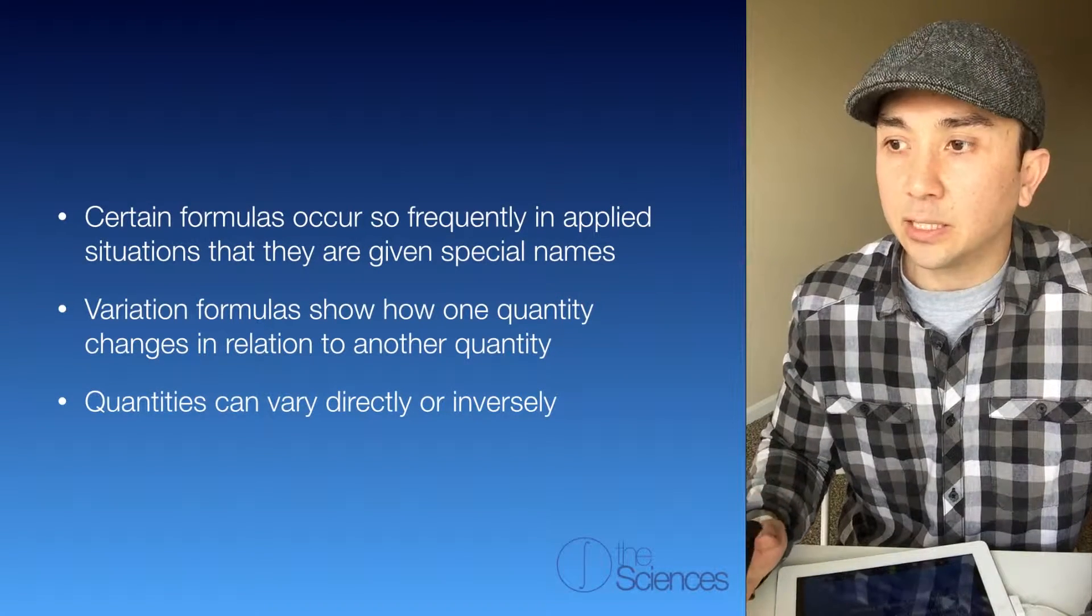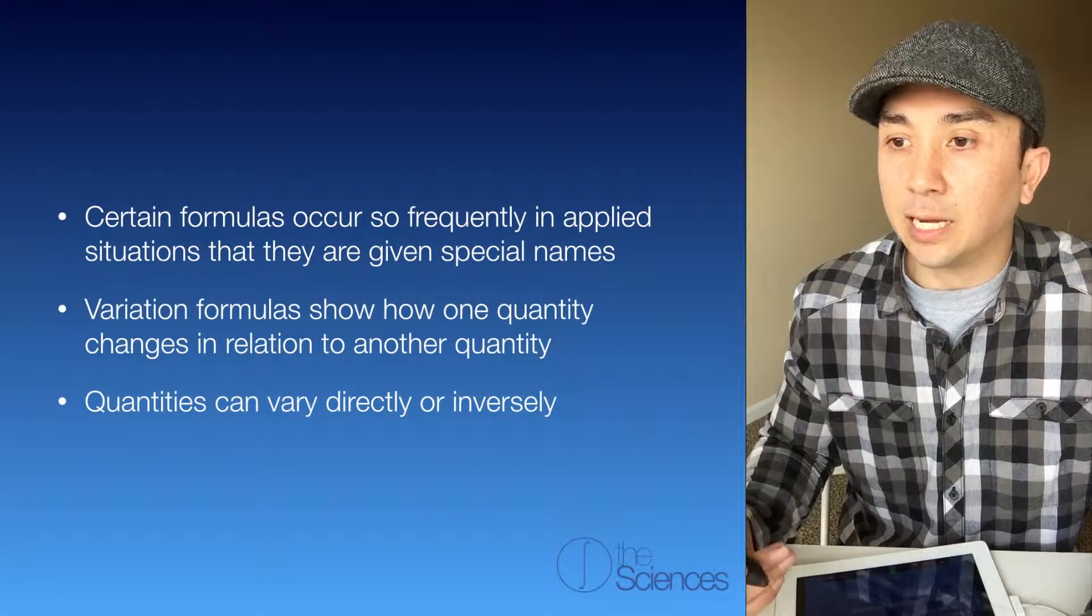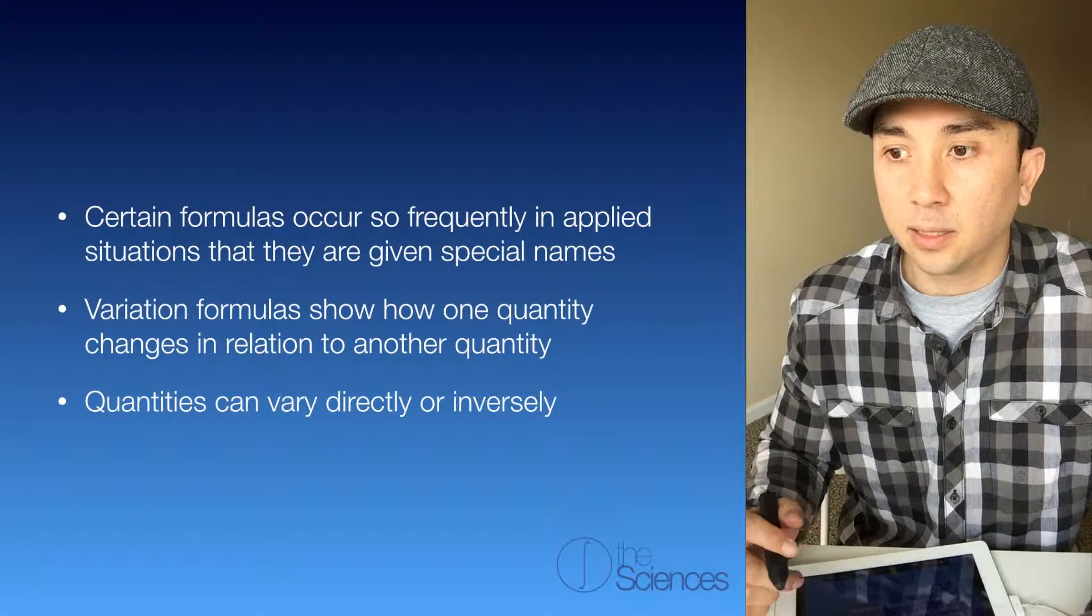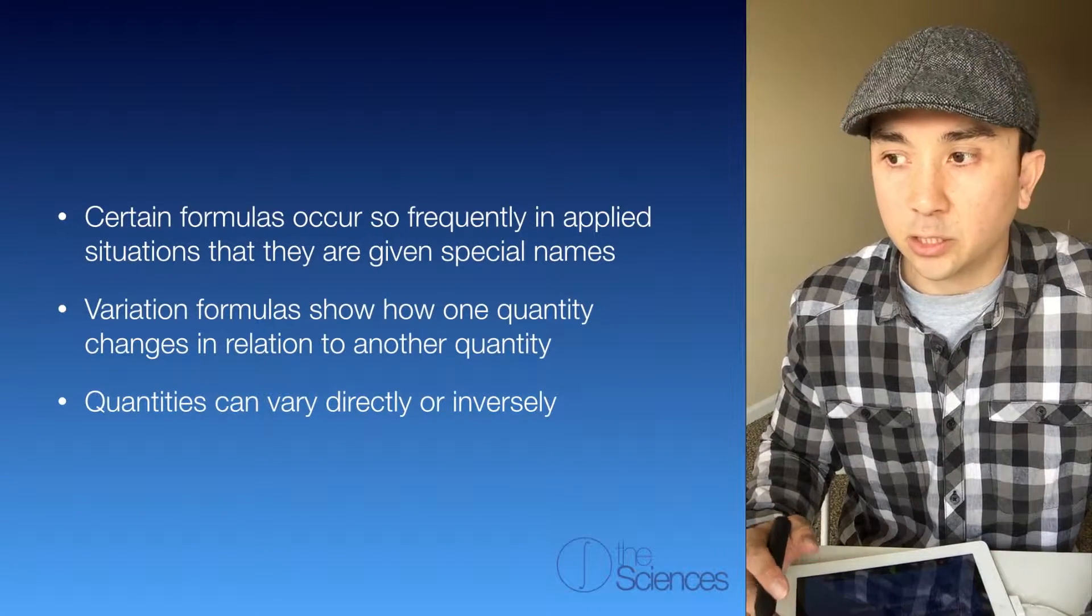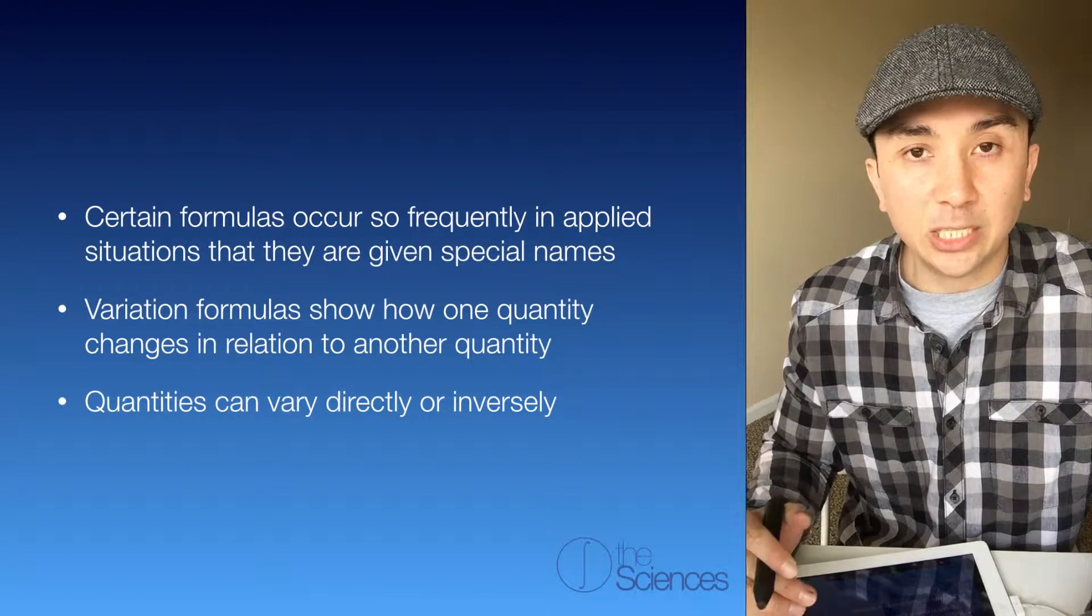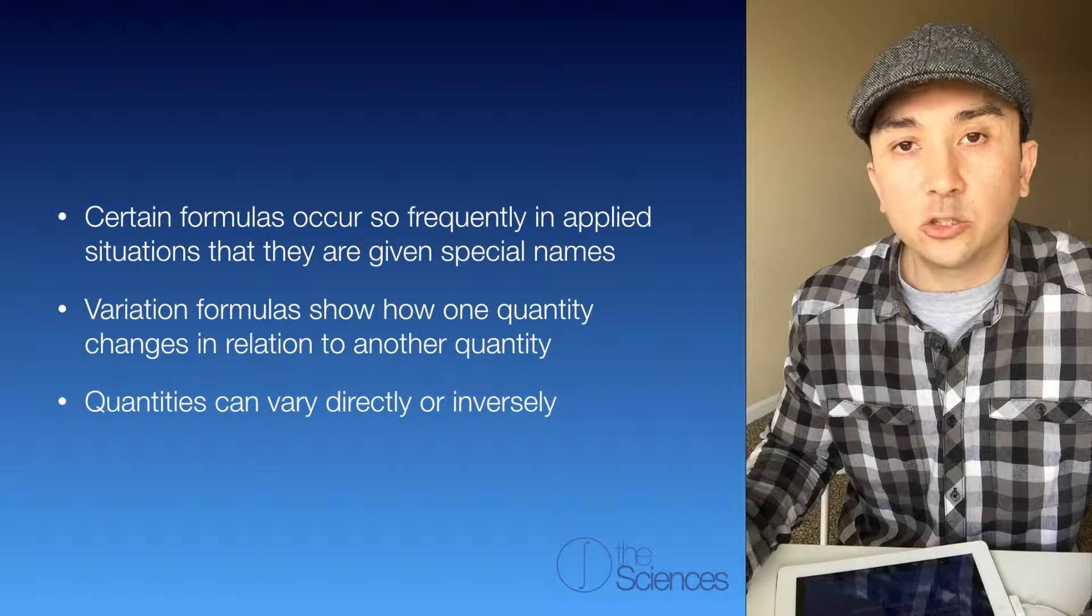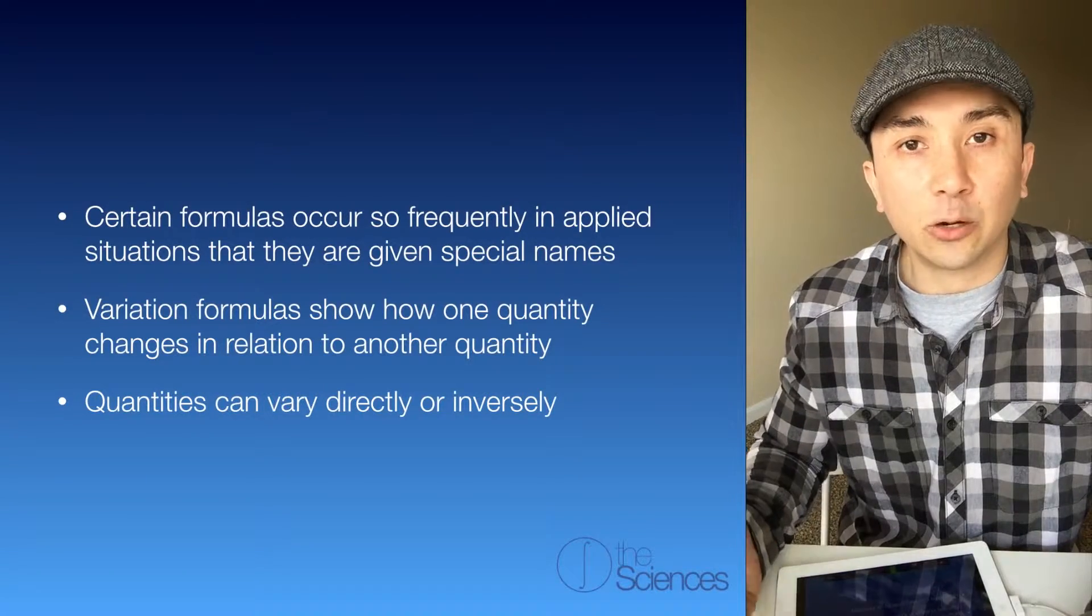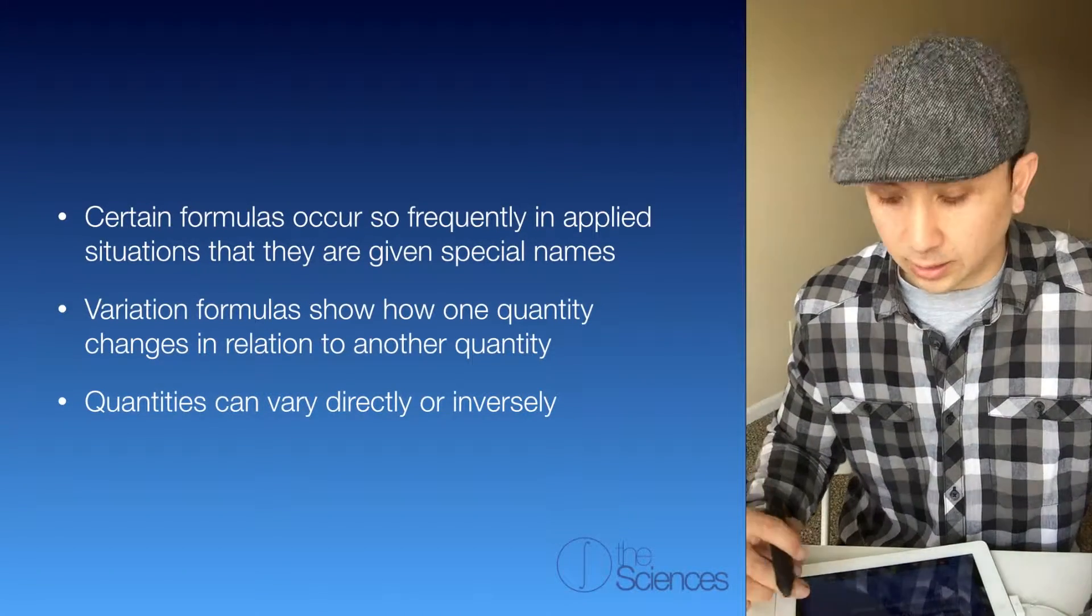Certain formulas occur so frequently in applied situations that they are given special names. Variation formulas show how one quantity changes in relation to another quantity. Quantities can vary directly or inversely.